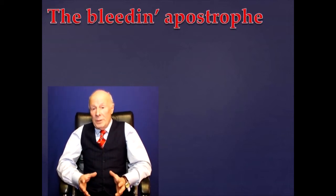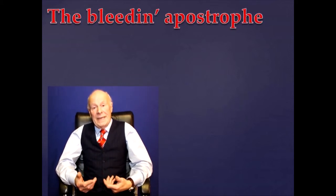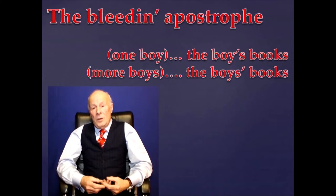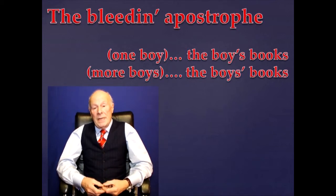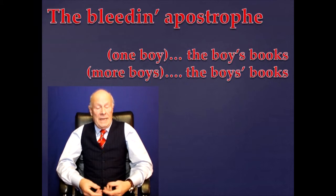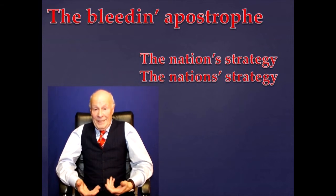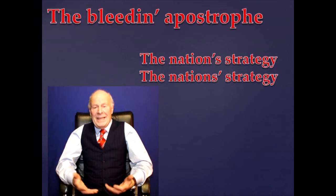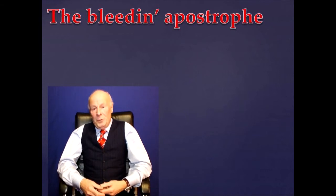If it's one person owning something, the apostrophe goes before the S. If it's a number of people, it goes after the S. So for one boy owning a number of books, it's 'the boy apostrophe S books'. If it's a number of boys owning the books, it goes after the S. One nation's strategy — the apostrophe goes before the S, there's only one nation. If there's more than one nation, it goes after the S. That is really very straightforward. I don't know why people make such a meal of the whole thing. From now on, 98% of the time you're going to get it right.